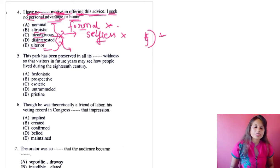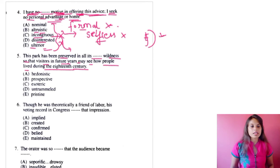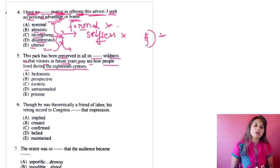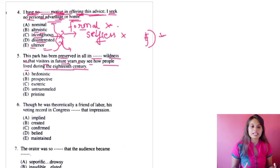Question five: 'This park has been preserved in all its [blank] wildness so that visitors in future years may see how people lived during the 18th century.' The park has preserved all its wildness so that future visitors can see the raw lifestyle of people from the 18th century. Let's see which option suits best.